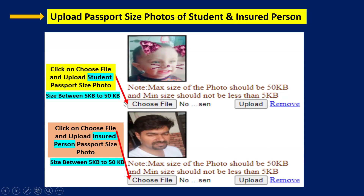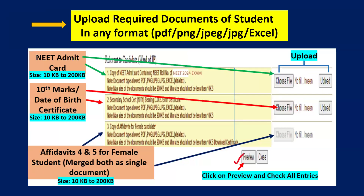Click on Choose File and upload the student's photograph. The size should be between 5 kilobytes and 50 kilobytes only — not less than 5 KB or more than 50 KB. Then click on Upload. Similarly, upload the insured person's (parent's) passport photograph here, with the same size requirements. Next, upload required documents of the student in any format like PDF, PNG, JPG, or Excel sheet.